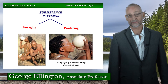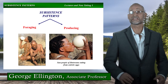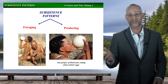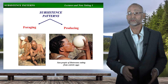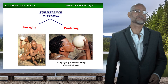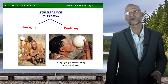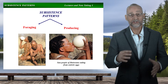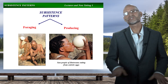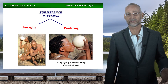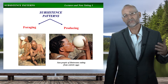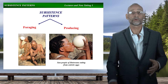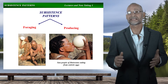Now that we've considered some factors that influence subsistence around the world, let's review the different subsistence patterns that have existed in history and which continue to exist today. The two categories of subsistence are foraging, which we'll discuss in a moment, and production. Production refers to how we control the growth of the foods we eat — both plants and animals — which are all domesticated.